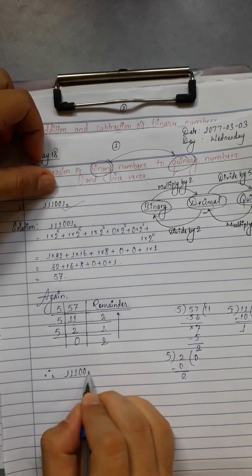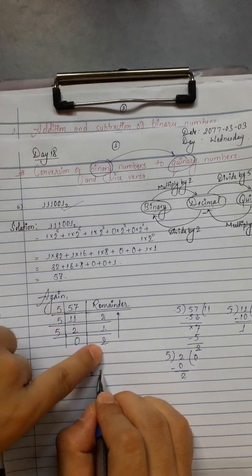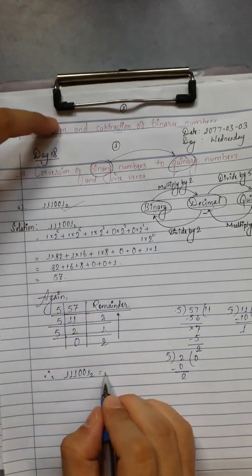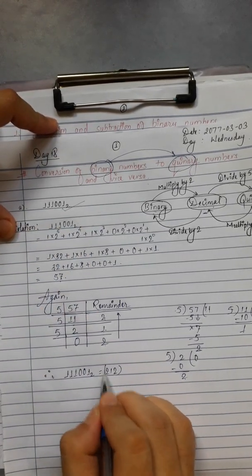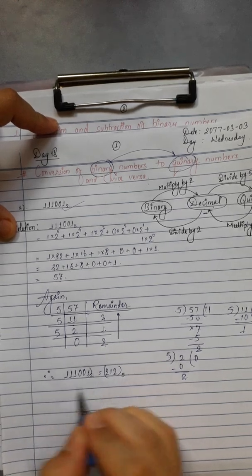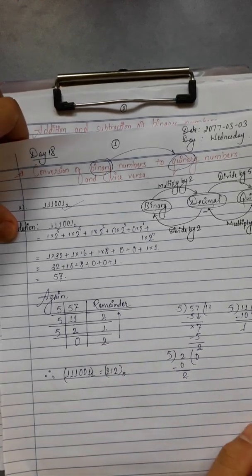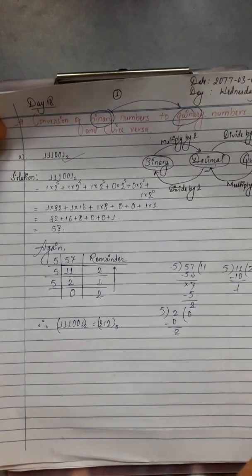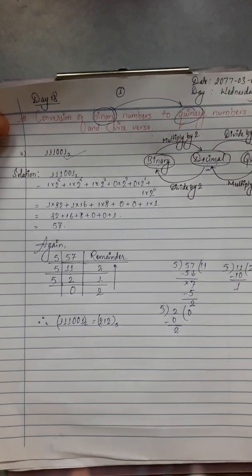To convert quinary back to binary: first convert quinary to decimal, then decimal to binary. For example, quinary 212: each digit times the corresponding power of 5, sum the results to get decimal, then convert that decimal to binary to get 111001. This confirms the two-step bridge method.